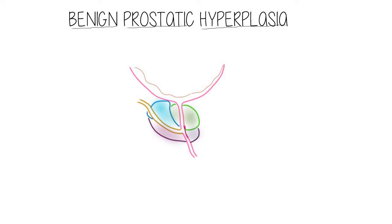The prostate gland consists of two things: one is the glandular element and the other one is the stroma. In benign prostatic hyperplasia, the number of cells of the glandular elements will increase and the number of cells of the stroma will also increase.